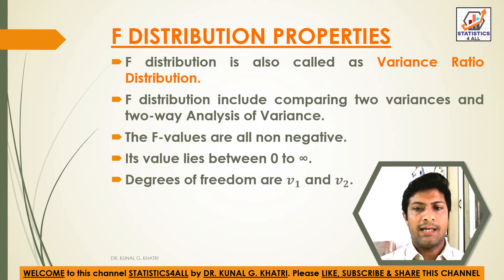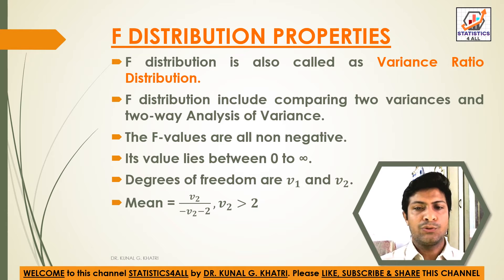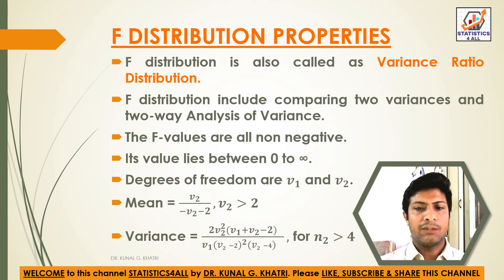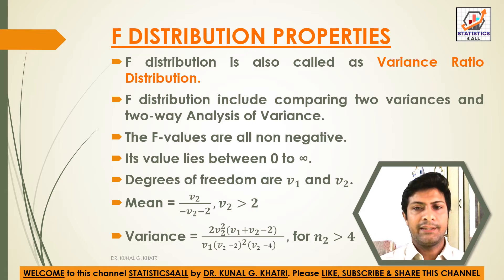Degrees of freedom are V1 and V2. Mean is equal to V2 divided by (V2 minus 2), where V2 is greater than 2. Variance is equal to 2·V2² · (V1 + V2 − 2), whole divided by V1 · (V2 − 2)² · (V2 − 4), for V2 greater than 4.